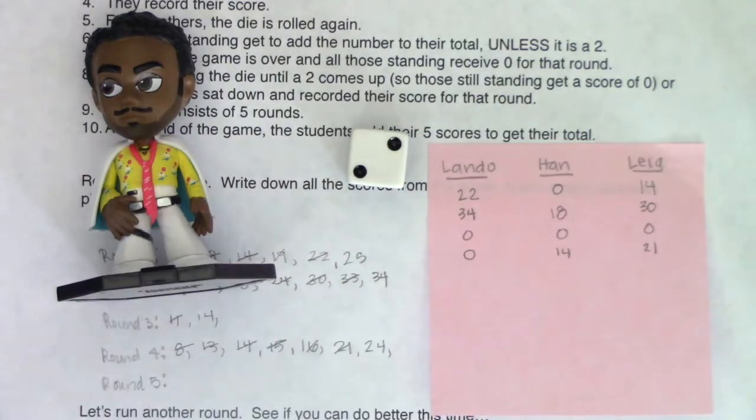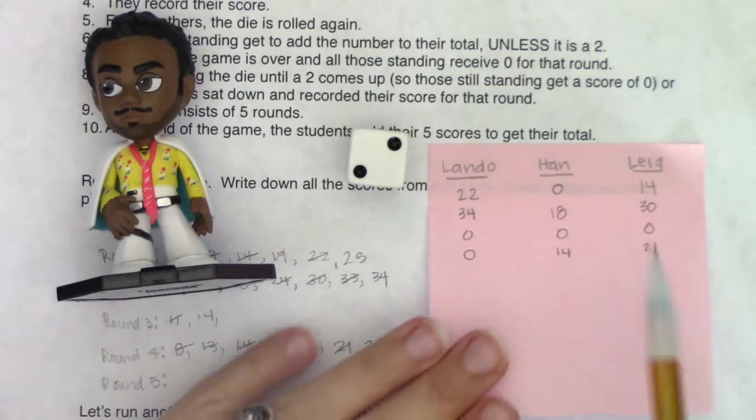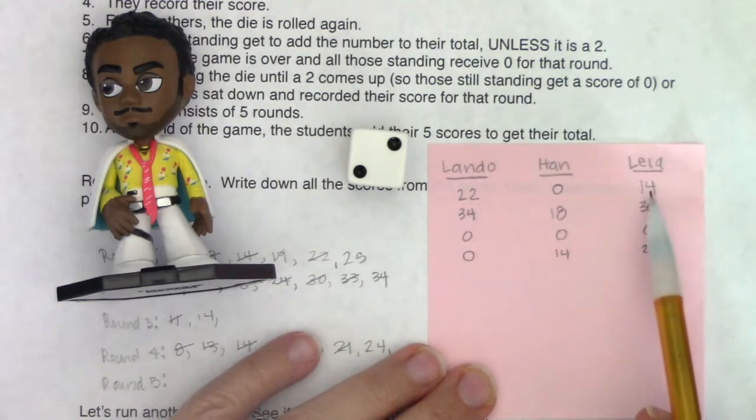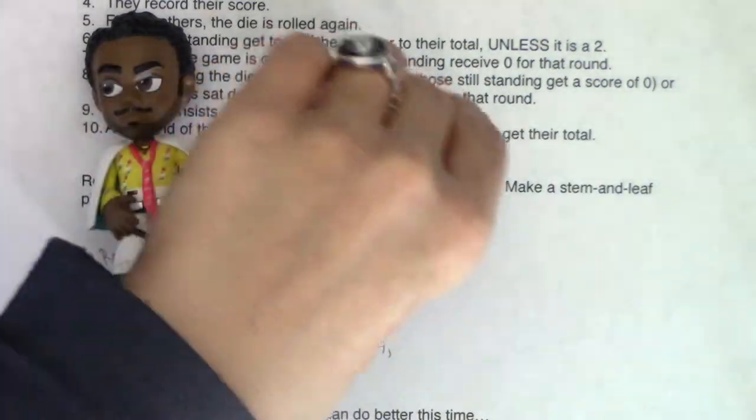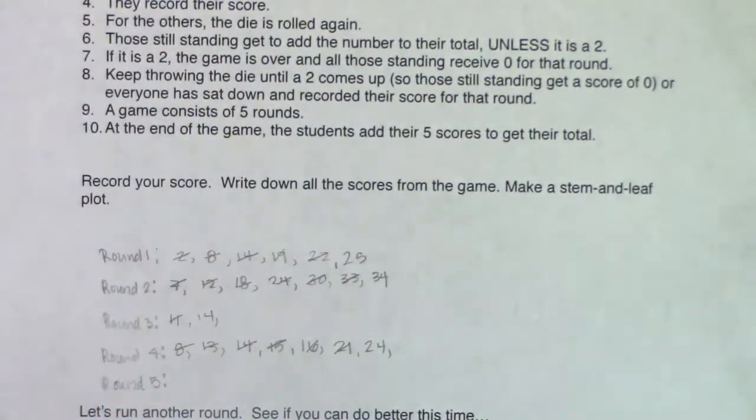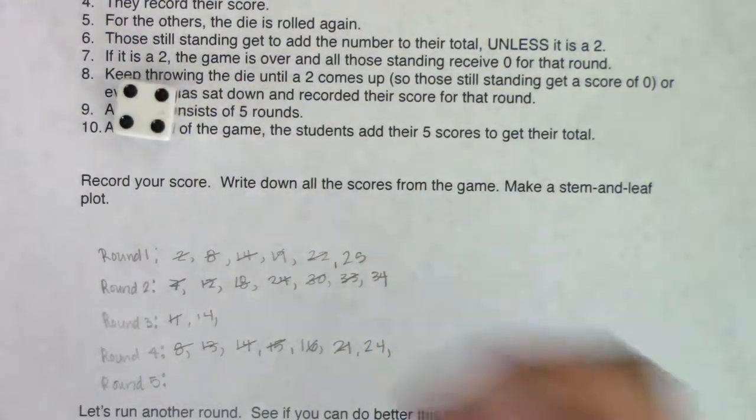So you can see the standing so far. And this is our last round. So here we go. Han's got some ground to cover up. I think Leia is doing the best out of the three of them. But it's pretty close between Leia and Lando. So we're starting with a three. And a four. So this last round is starting with a seven.